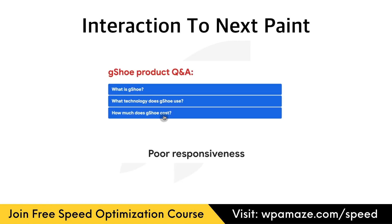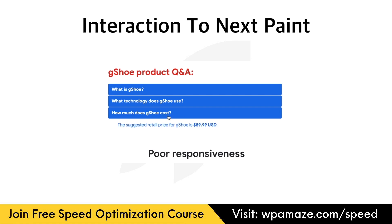INP, or interaction to next paint, is a metric that assesses a page's overall responsiveness to user interactions by observing the latency of all clicks, taps, and keyboard interactions that occur throughout the lifespan of a user's visit to a page. The final INP value is the longest interaction observed, ignoring outliers.